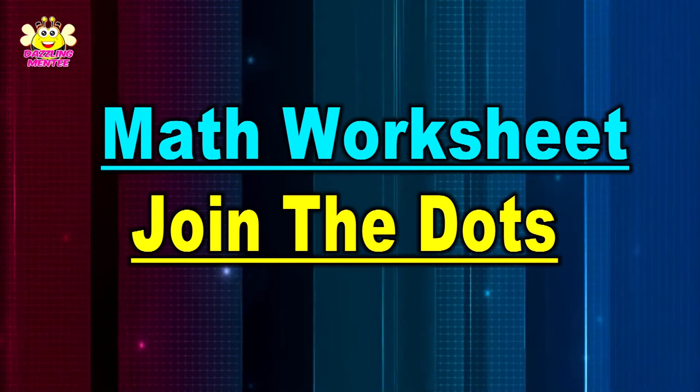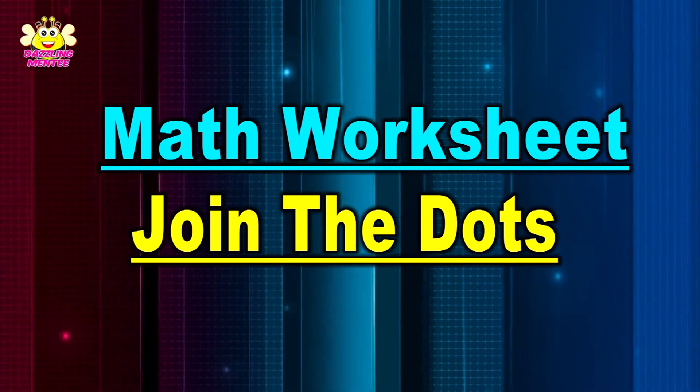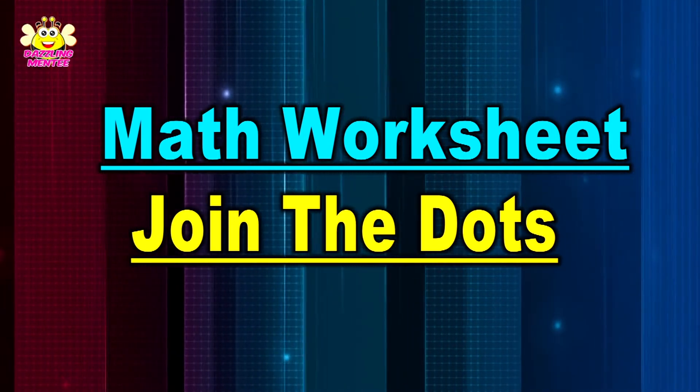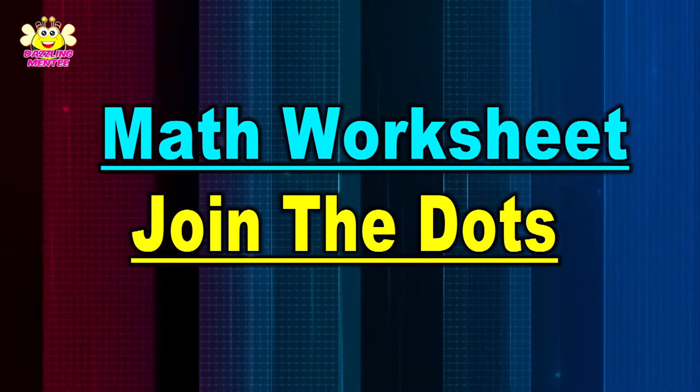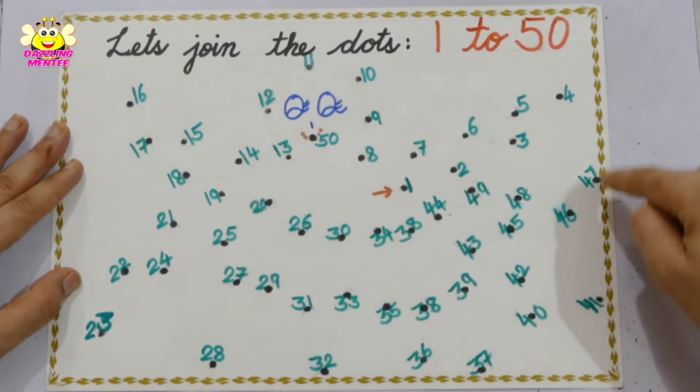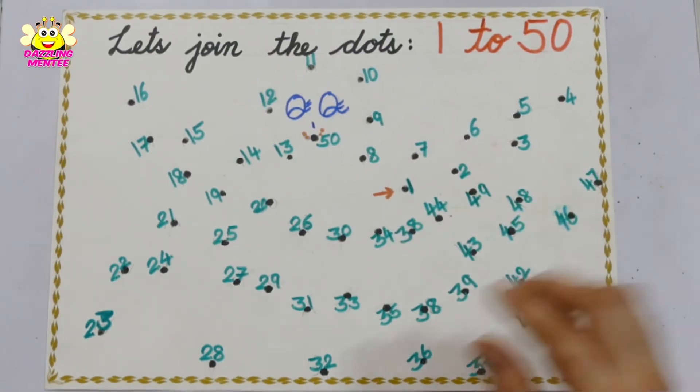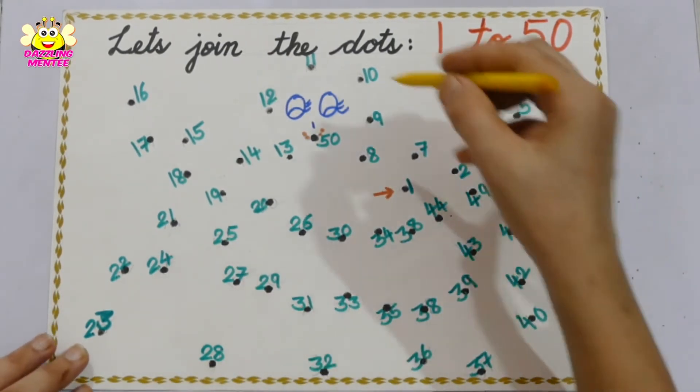Hello kids, what's this in front of you? Let's join the dots. This is your math worksheet. Here, 1 to 50, numbers are here, and if I take one color, let's start and find out.